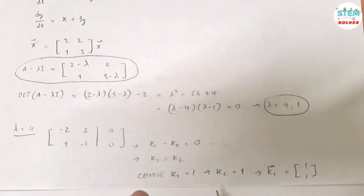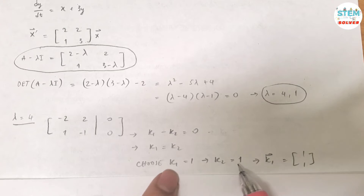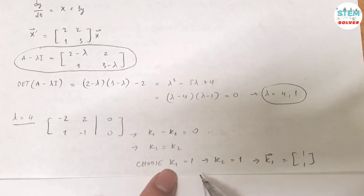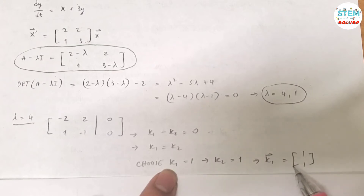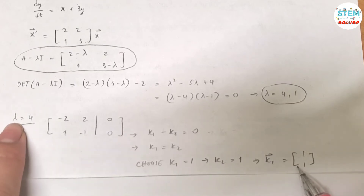Choose k1 equals 1, then k2 is also equal to 1. You can choose whatever value for k1 or k2 and substitute to get the other value. So the eigenvector k1 is equal to [1, 1] — that is the eigenvector for lambda equals 4.